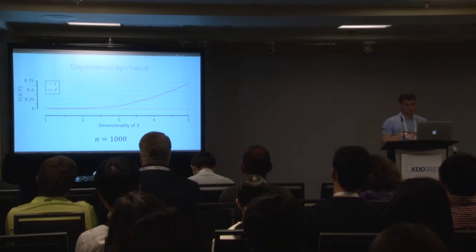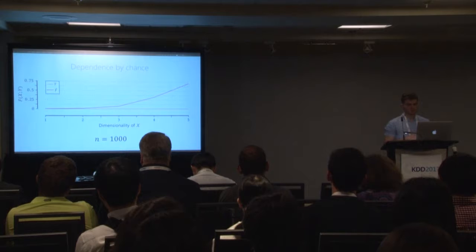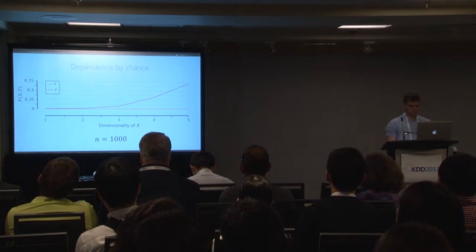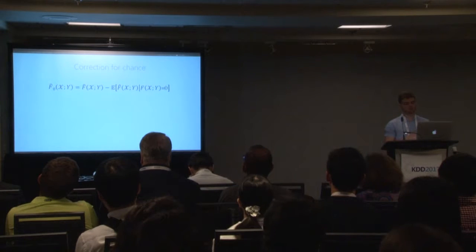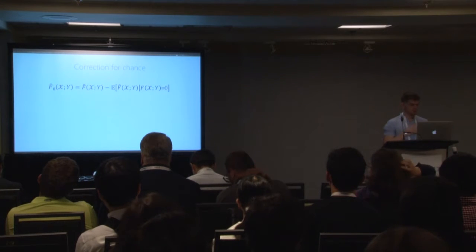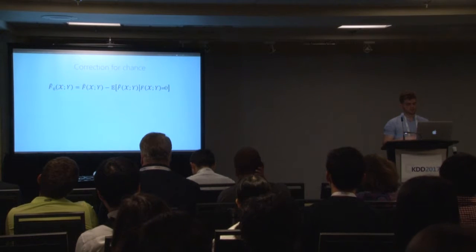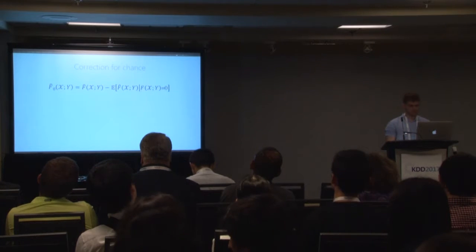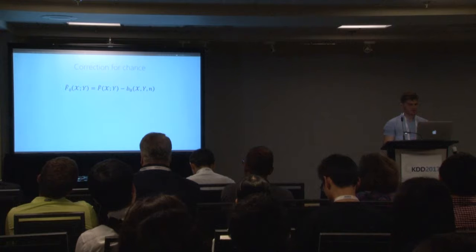So how do we solve this problem? A nice idea is to compute this overestimation and subtract it from the actual score we computed. This is very hard in the general case, but we can focus on the particular case of independence. So we take the estimator and subtract the expected value of the score if we know X and Y are independent — I'll refer to that as B0.